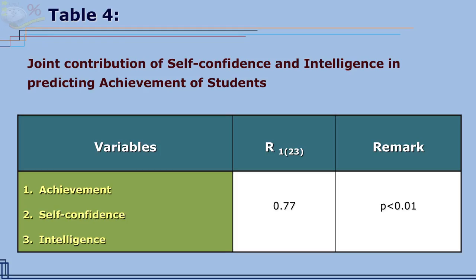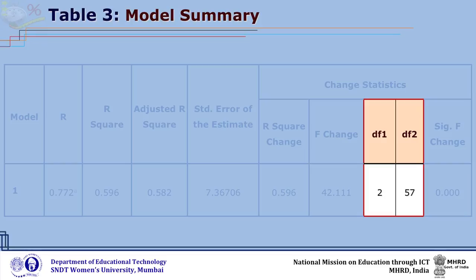From the SPSS output, Table 4 can be prepared. The title of Table 4 is: joint contribution of self-confidence and intelligence in predicting achievement of students. From Table 4, it is evident that the multiple correlation coefficient is 0.77, which is significant at the 0.01 level with df equal to 2/57.